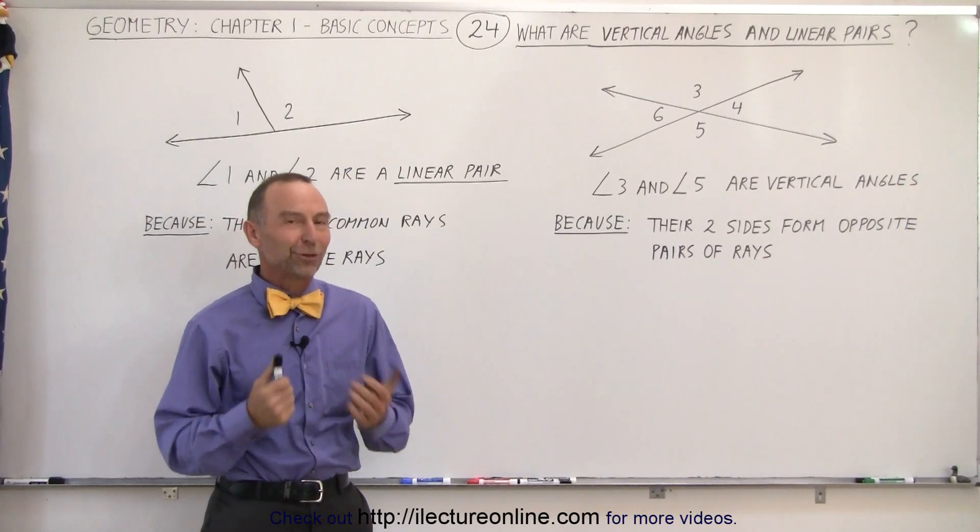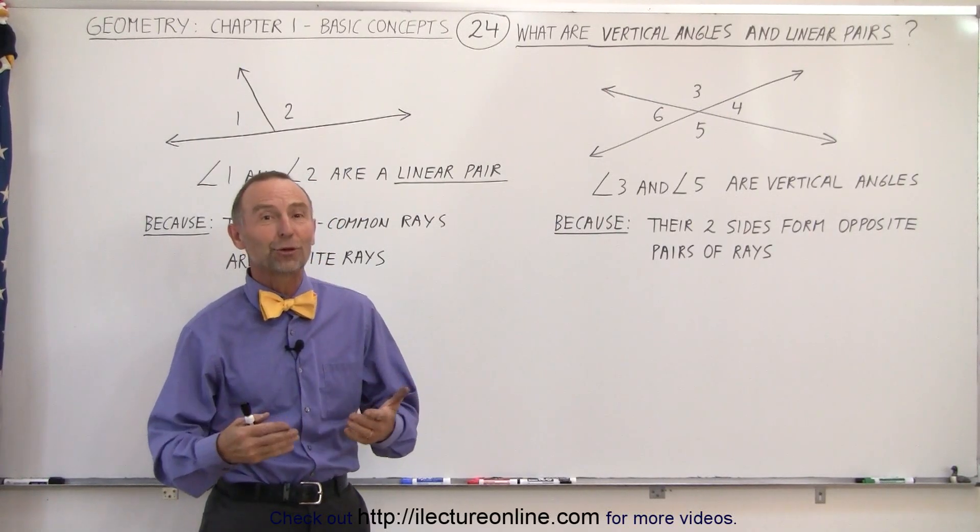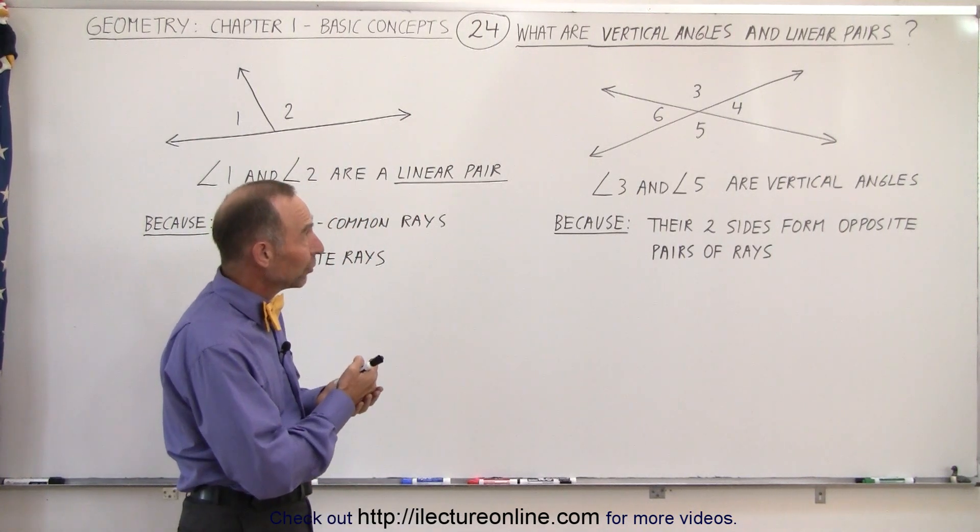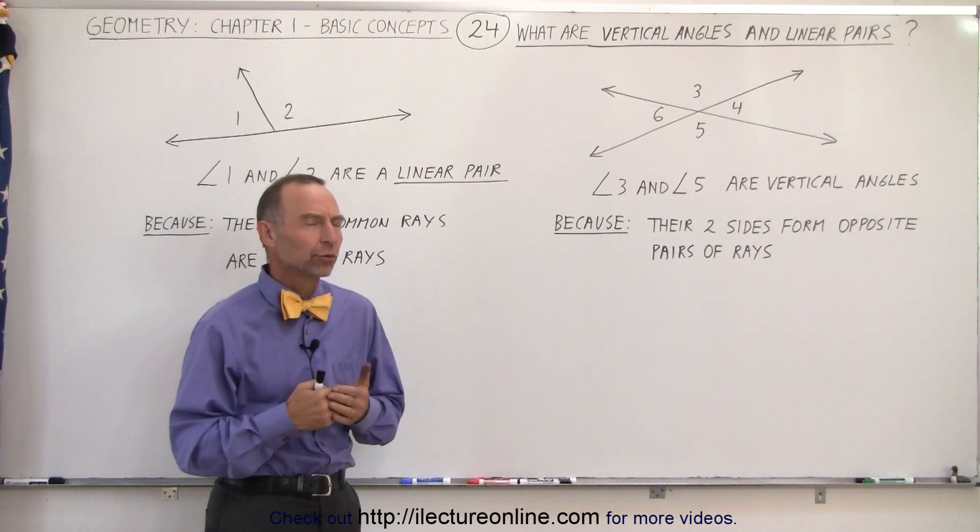In geometry there are just a lot of terms, and here are just two more terms related to angles. They're called vertical angles and linear pairs. And what are those?